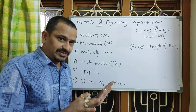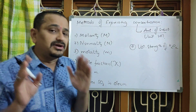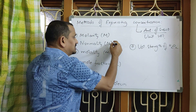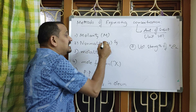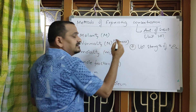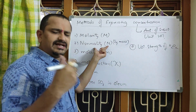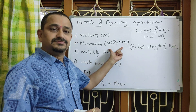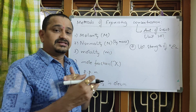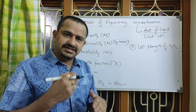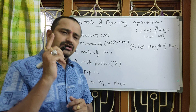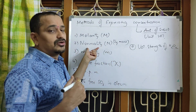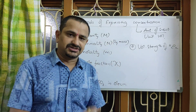We will learn these methods of expressing concentration as per our syllabus. For normality, we need to recap the concept of equivalent mass — without it we cannot learn normality. So before the next class, everyone must study equivalent mass again. After molarity we have to discuss equivalent mass, and then normality will be very easy. We will continue these topics in the next session.